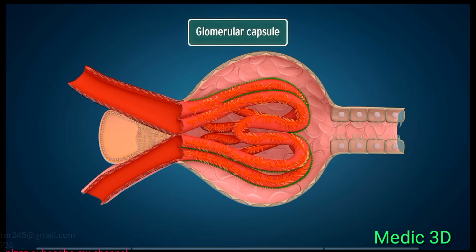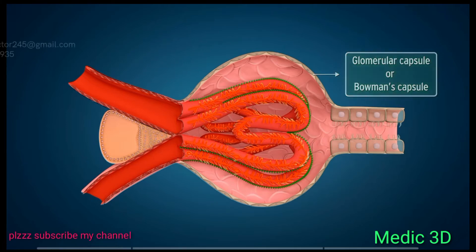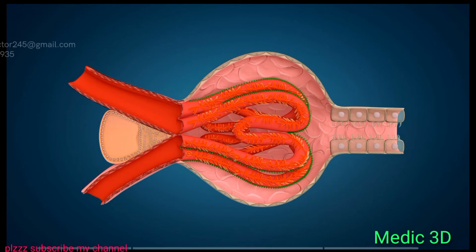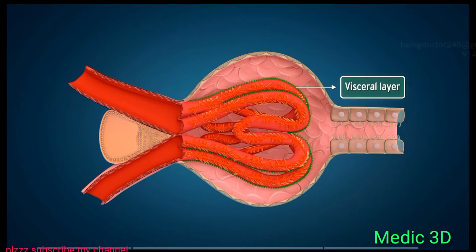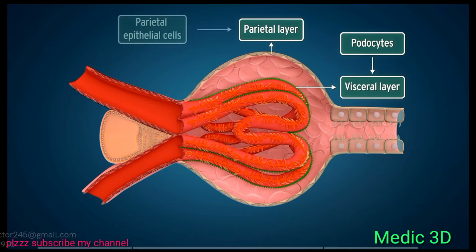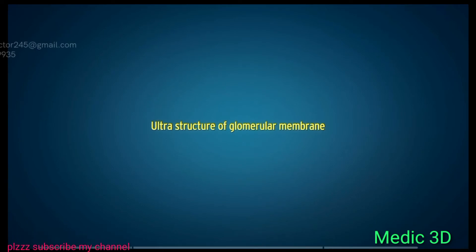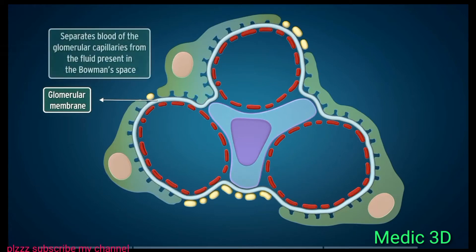The glomerular capsule, also known as Bowman's capsule, is the initial cup-like dilated portion of the nephron that accommodates the glomerulus. The capsule has two layers: the inner visceral layer covering the glomerular capillaries, and the outer parietal layer. The podocytes form the visceral layer of Bowman's capsule, while the parietal layer is formed by parietal epithelial cells. The space between the visceral and parietal layers is called Bowman's space.